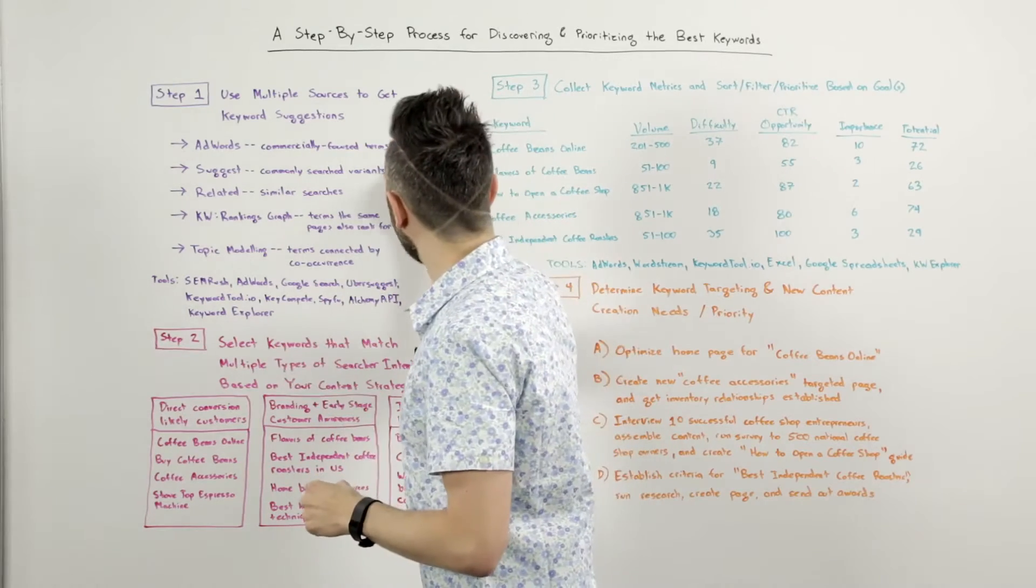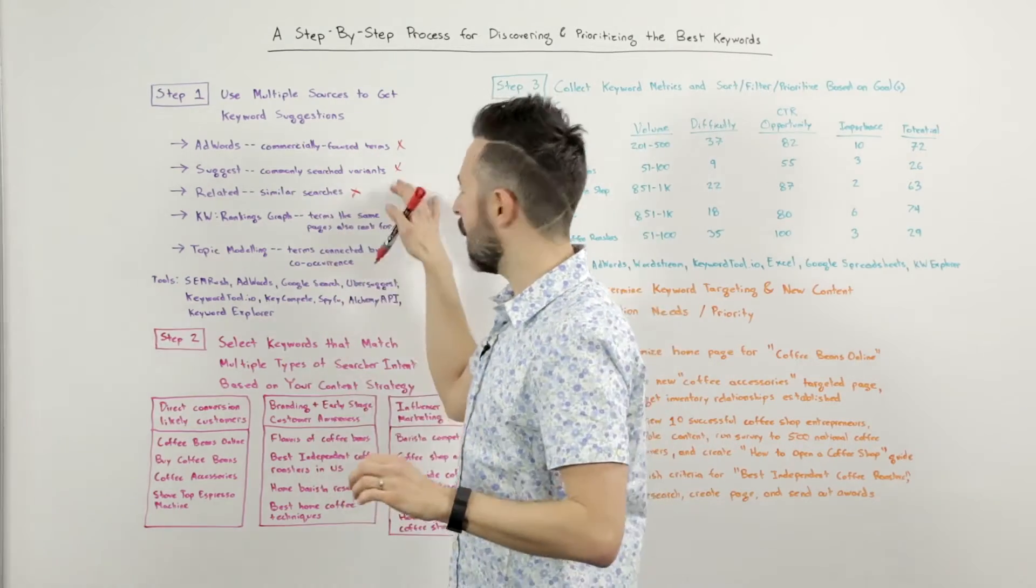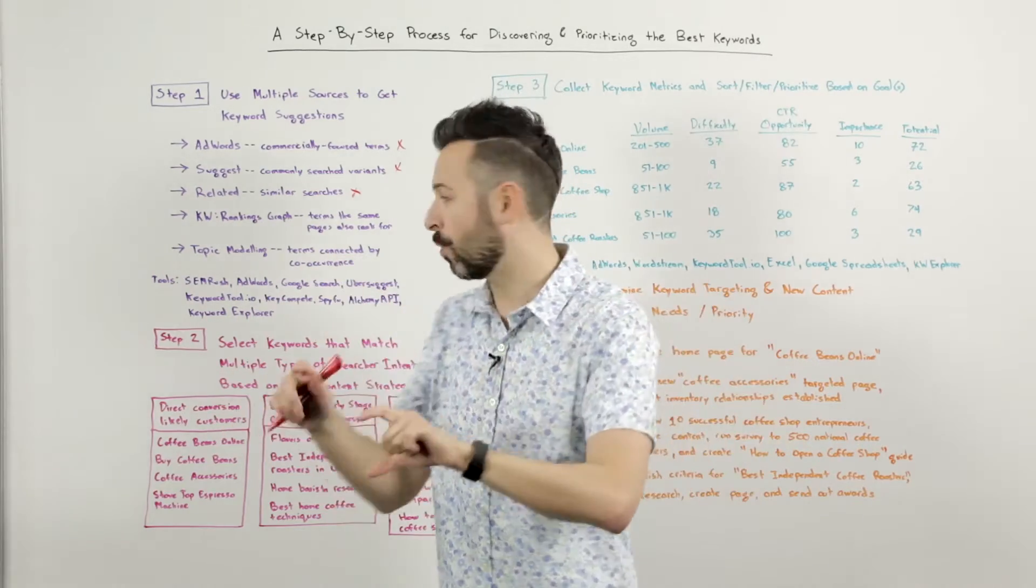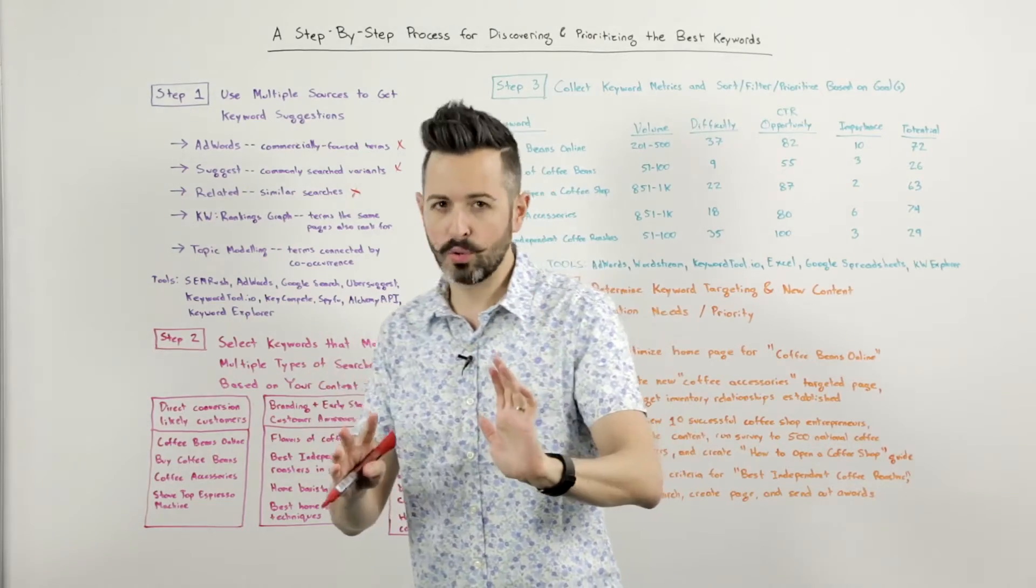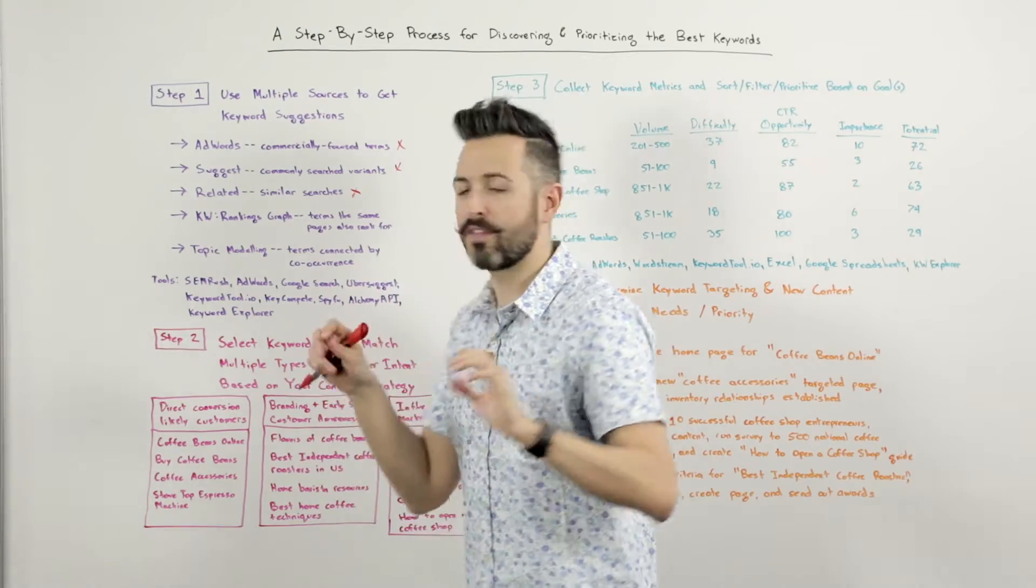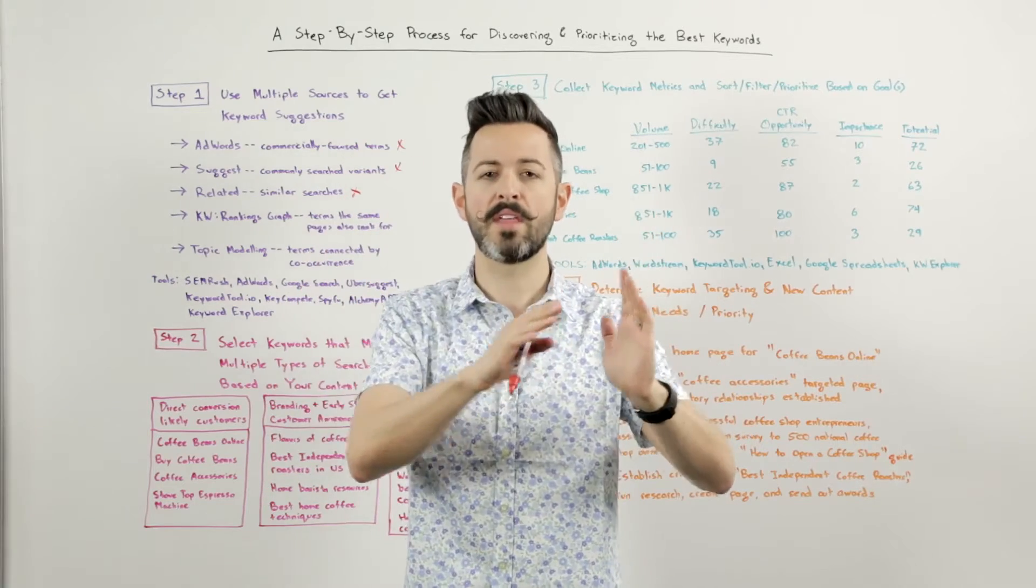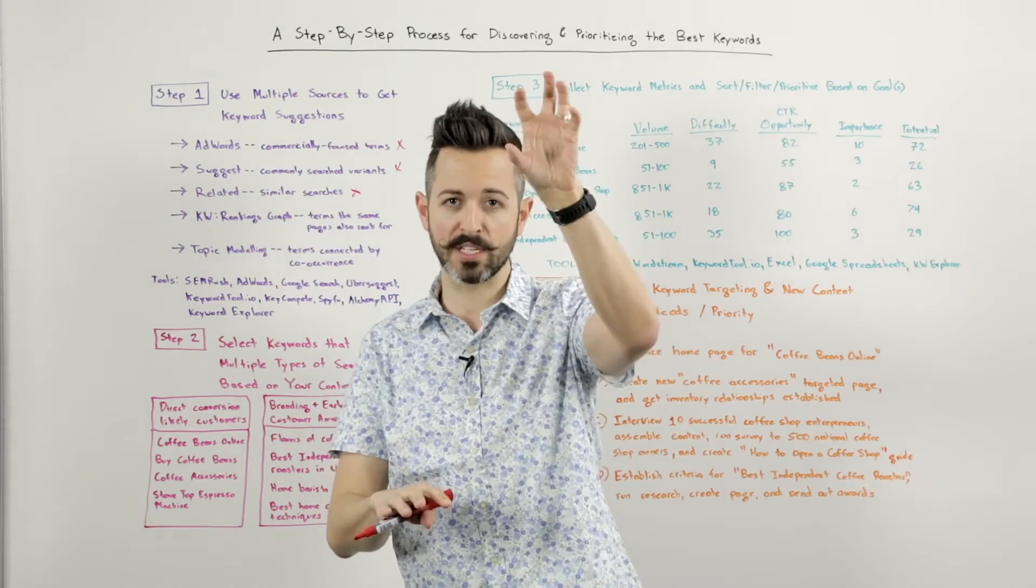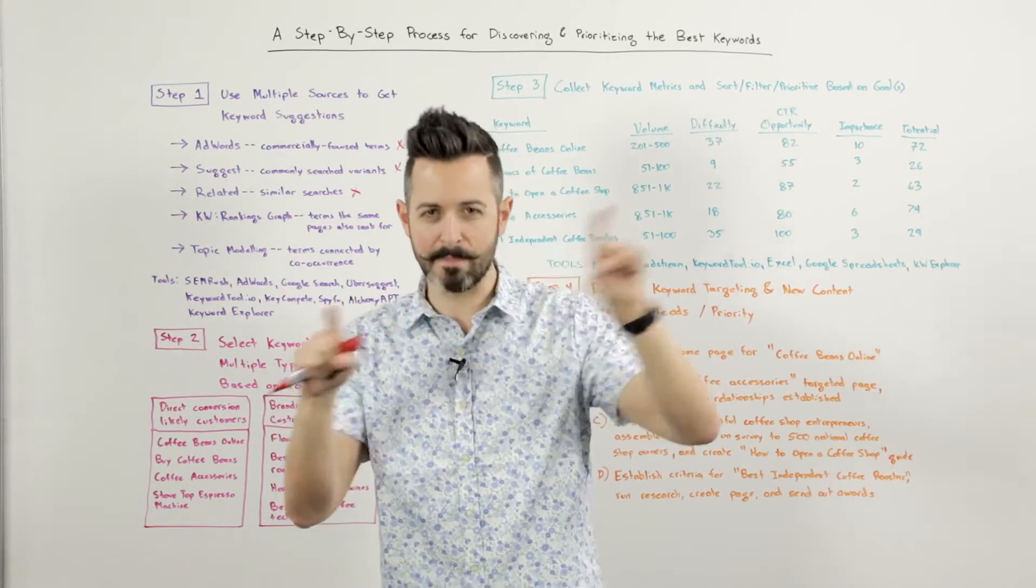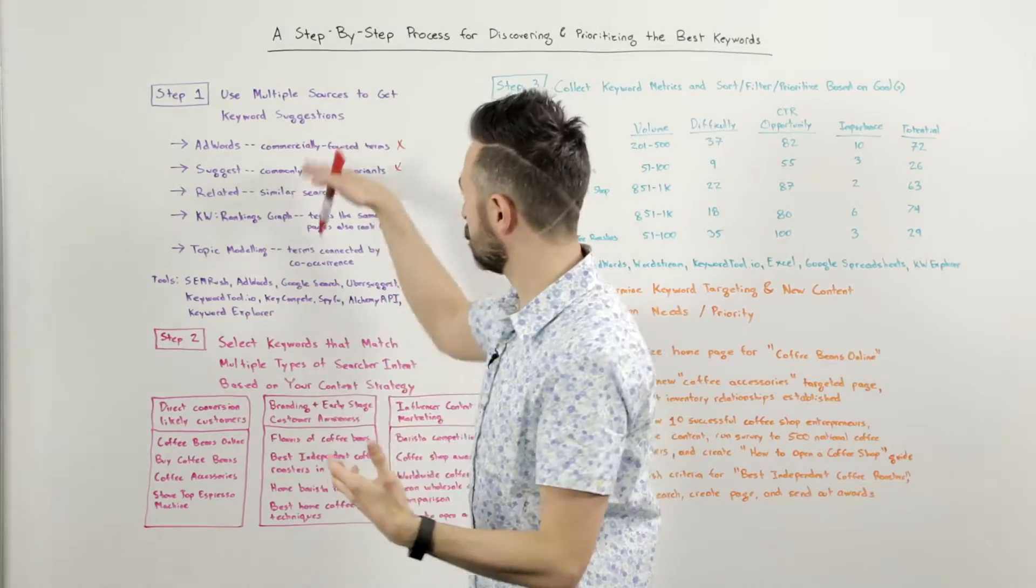Suggest, you can go to Google Suggest, and in fact, Google-related searches, which are at the bottom of the search versus the top in the bar that you type. Those both give variants and searches that people who search for this also performed. Then you'll see there's a lot of tools out there. SEMrush is by far the most popular one, and in my opinion, a really good one, for keyword to rankings graph. Essentially, what this is saying is here are keywords that the pages that rank for the keyword you gave us also rank for.